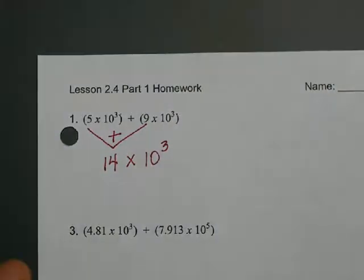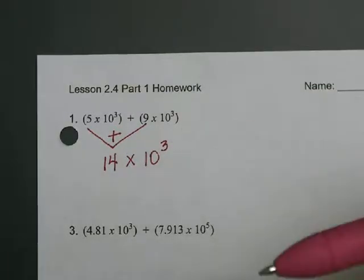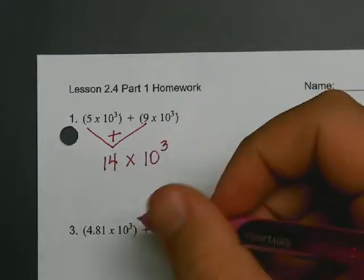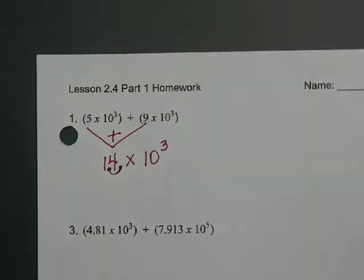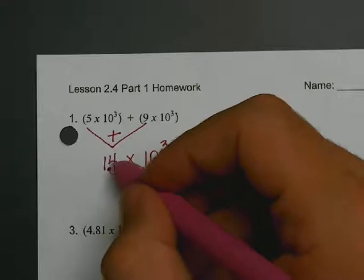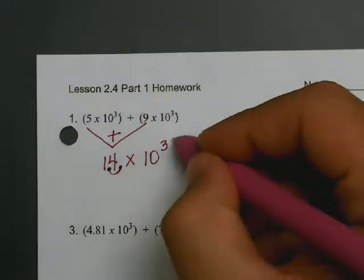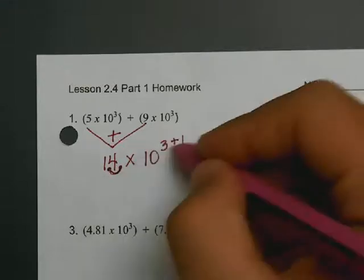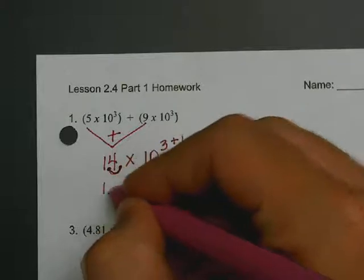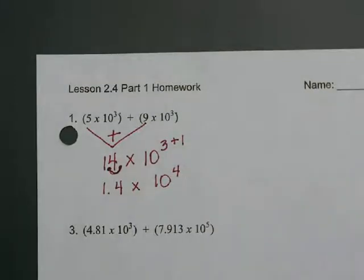Now, this would be right, but for this homework assignment, you have to put all of your answers in scientific notation. So this isn't scientific notation. What you're going to have to do is move your decimal one time to the left to set it up for scientific notation. When you move that to the left, you just took this from 14 to 1.4. So if you decrease this, this number is going to have to increase by 1. So now it is 1.4 times 10 to the fourth power. Then from there, circle your final answer.